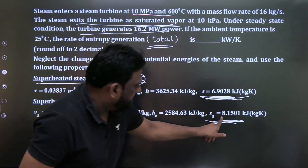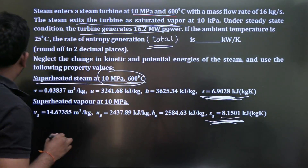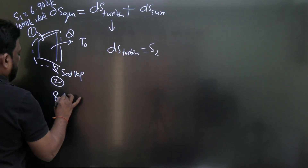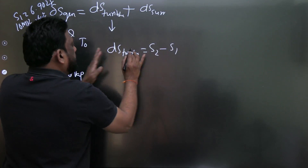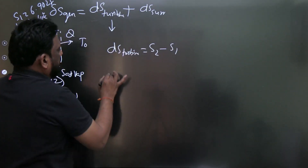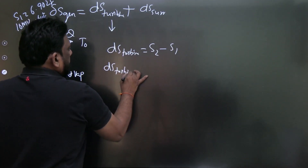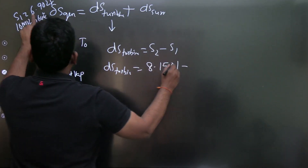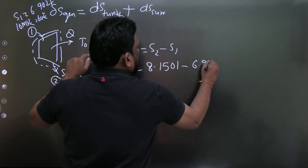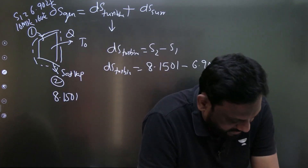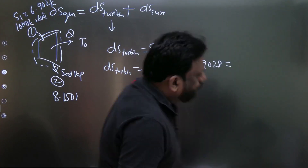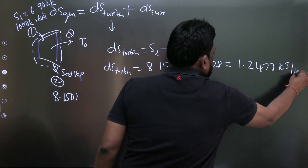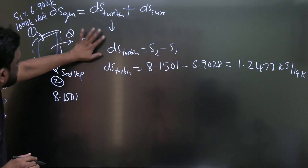At inlet: s1 = 6.9028 kJ/kg·K at 10 MPa, 600°C. At exit: saturated vapor gives s2 = sg = 8.1501 kJ/kg·K at 10 kPa. Therefore, entropy change of the fluid = s2 − s1 = 8.1501 − 6.9028 = 1.2473 kJ/kg·K.